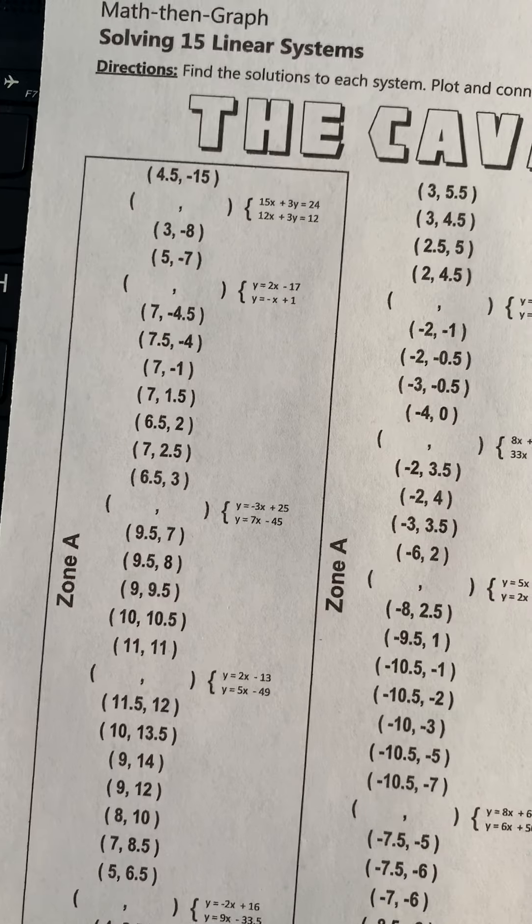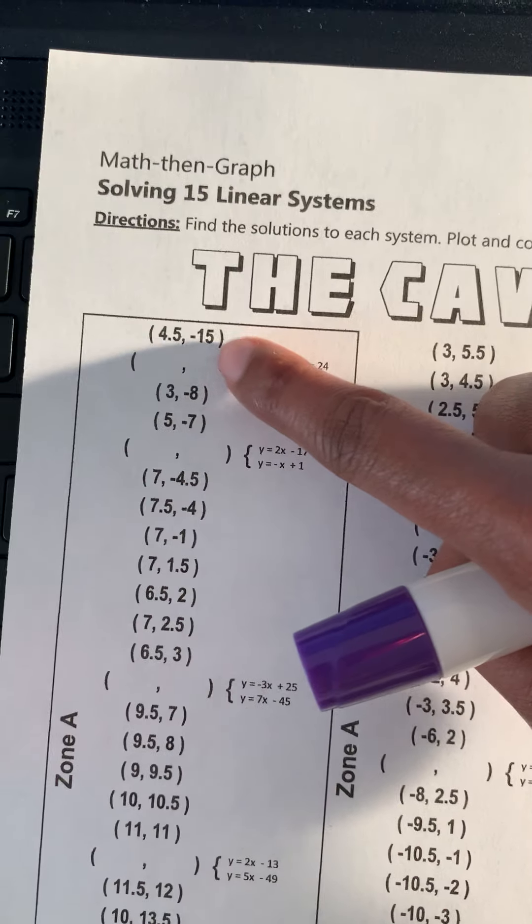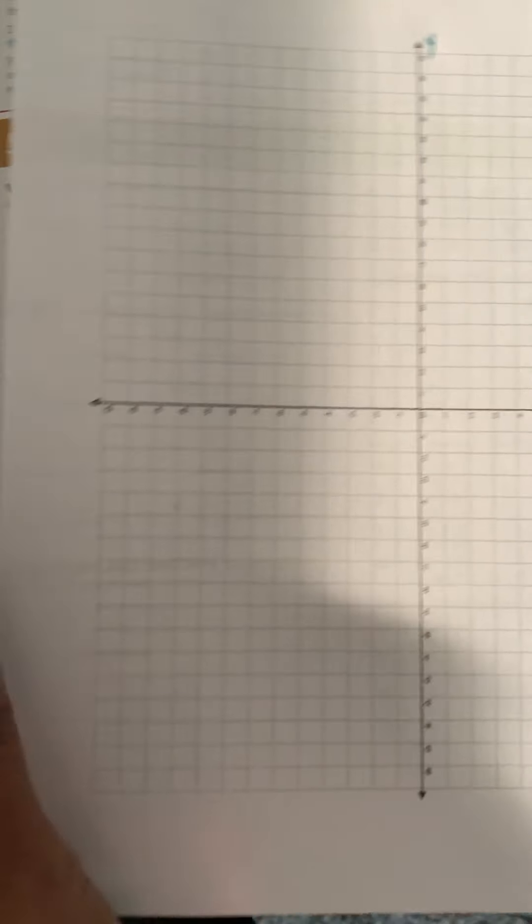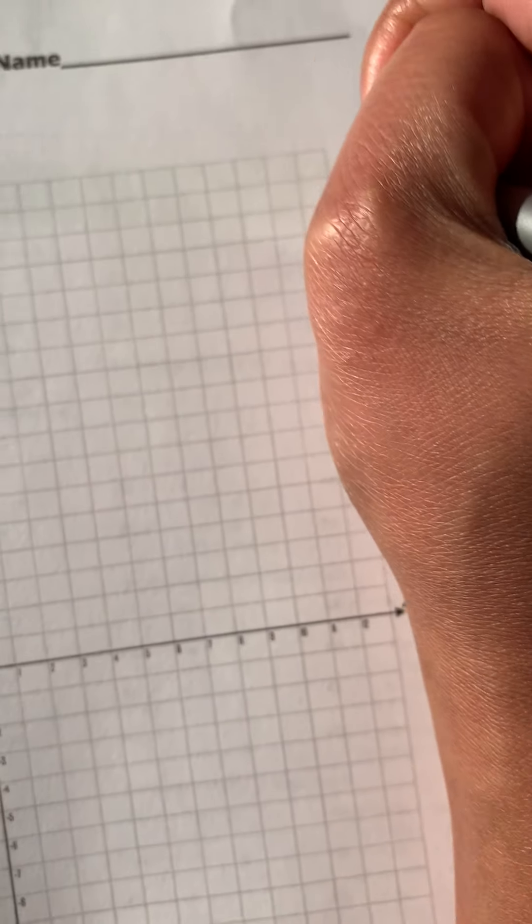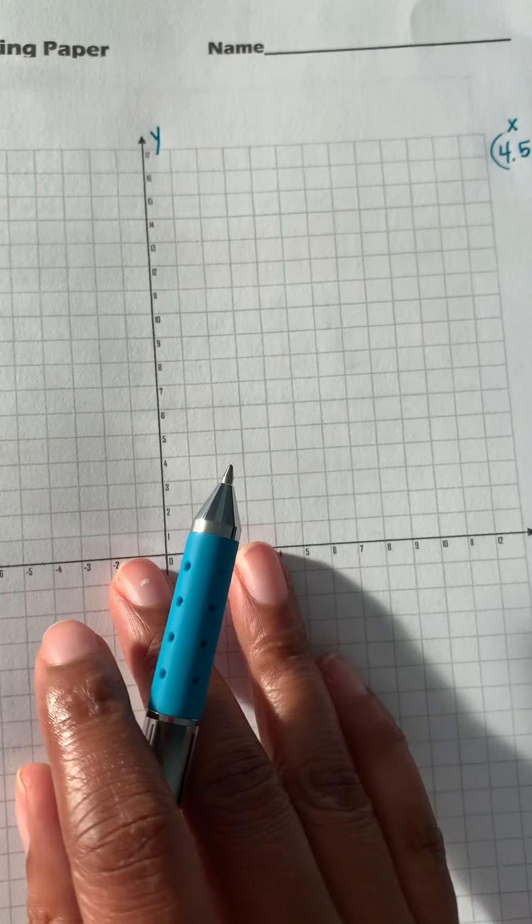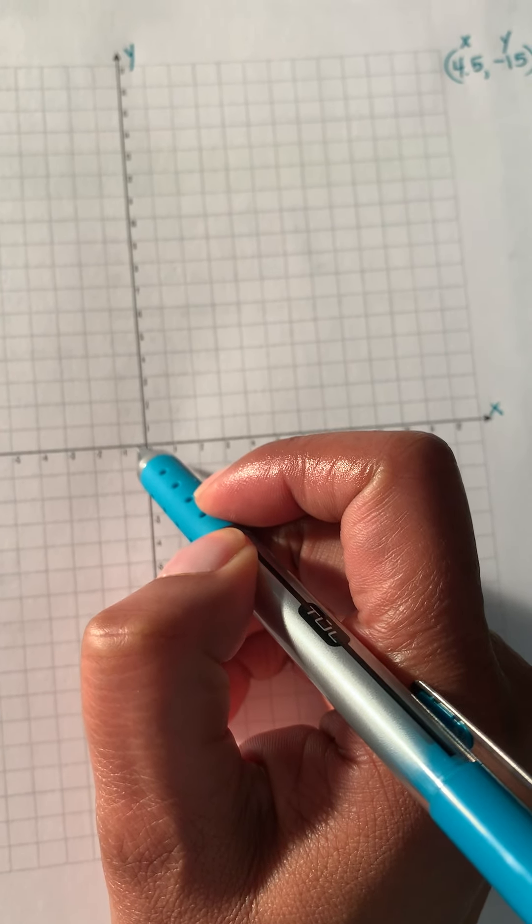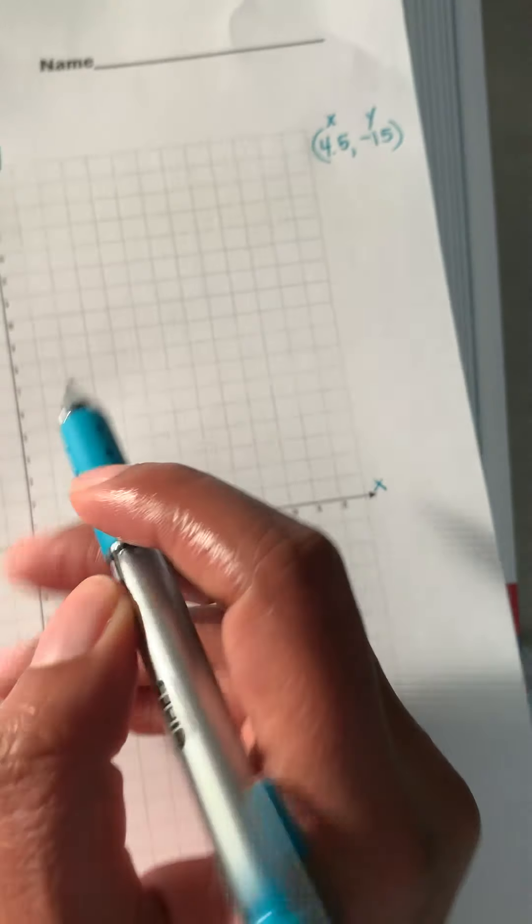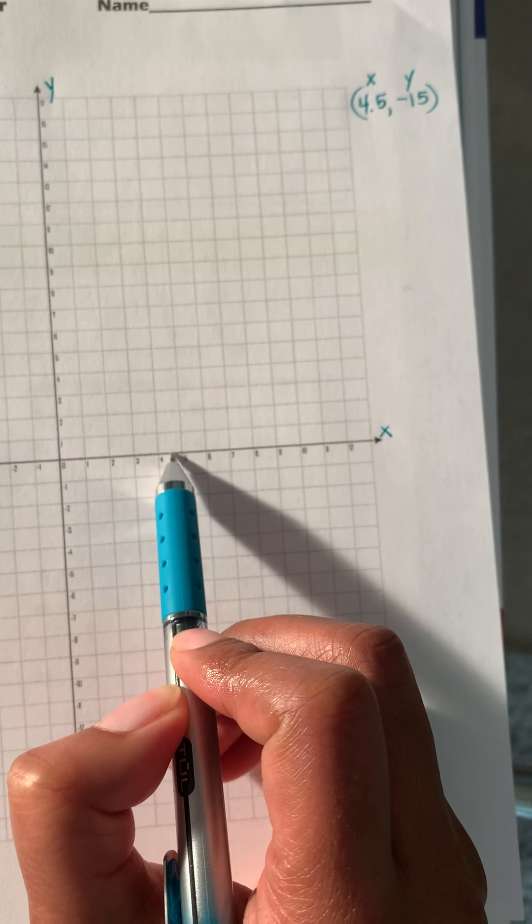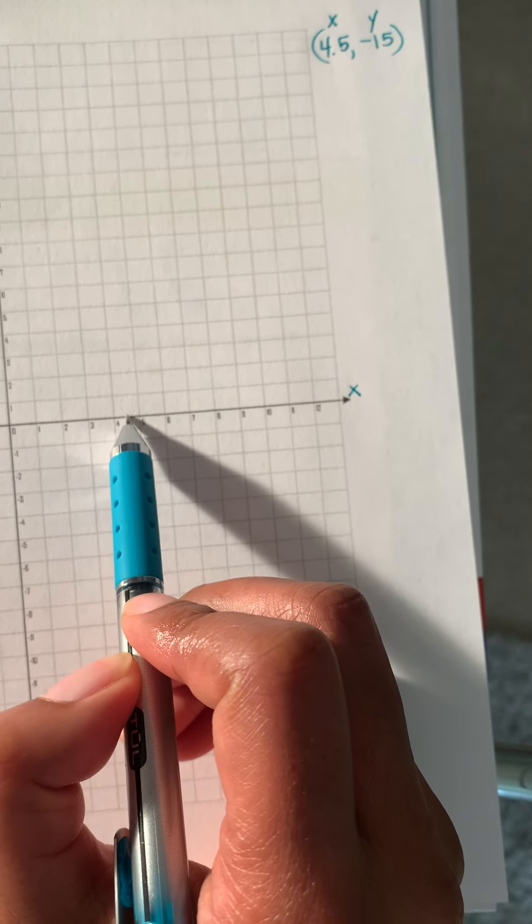We're going to graph this first one, 4.5, negative 15. So you know we have our x coordinate and our y coordinate. I have graph paper, and this is my x-axis here, and my y-axis is here. The first point that I want to plot is 4.5, negative 15. So I have my x coordinate and my y coordinate. Remember we talked about this is the origin when you're graphing. So we're going to go to the right or to the left 4.5. Since 4.5 is positive, I want you to move to the right. So we're just going to count 1, 2, 3, 4 and a half, right there.